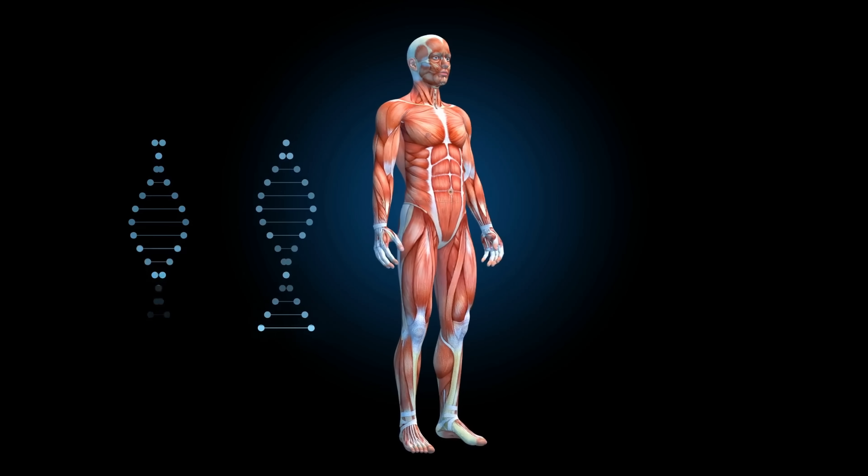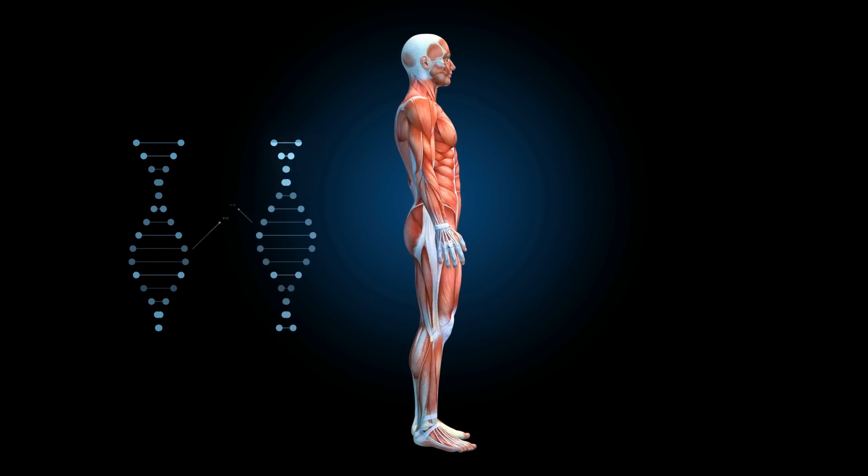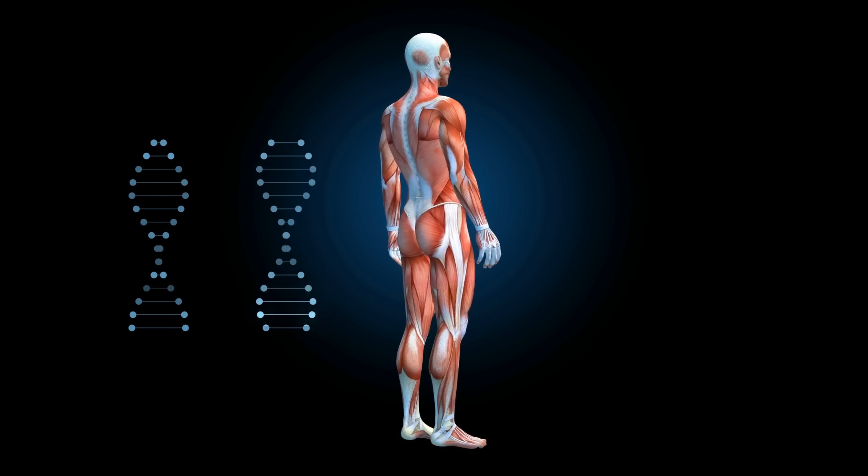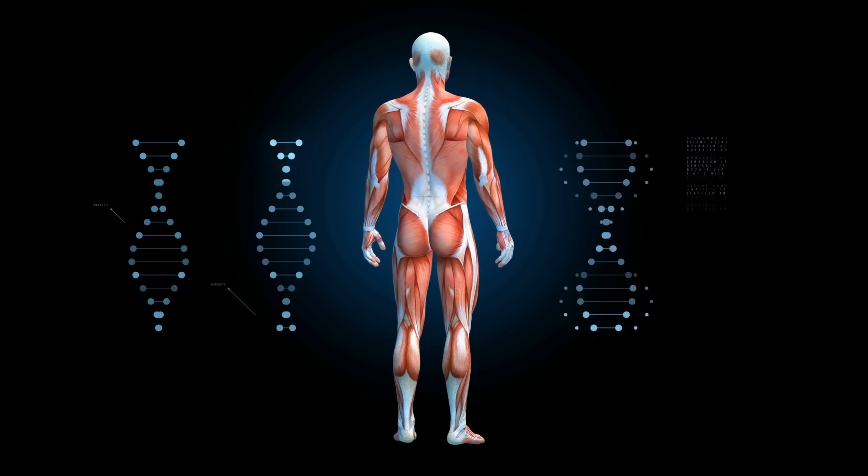Our cells' machinery, especially our nerves and muscles, rely on potassium ions. Thallium sneaks in, masquerading as potassium, and that's where the trouble begins.